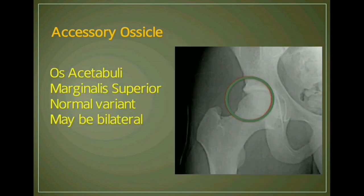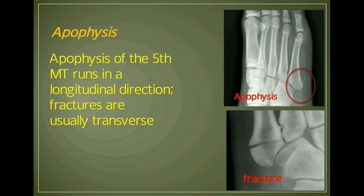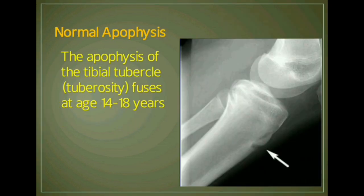A third example of an accessory ossicle is os acetabuli marginalis superior, which is a normal variant and may be bilateral. The second category of fracture mimics is apophysis. The apophysis of the fifth metatarsal bone runs in a longitudinal direction, but fractures are usually transverse.